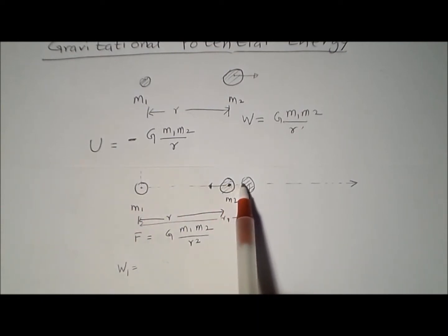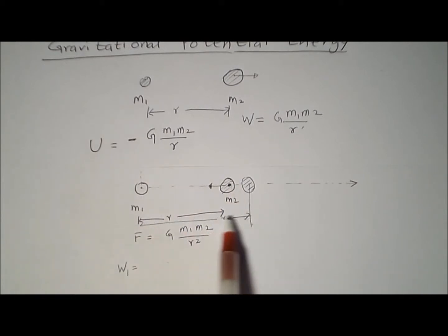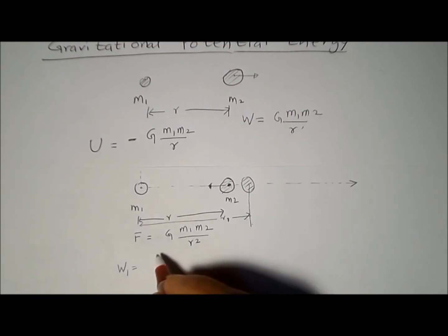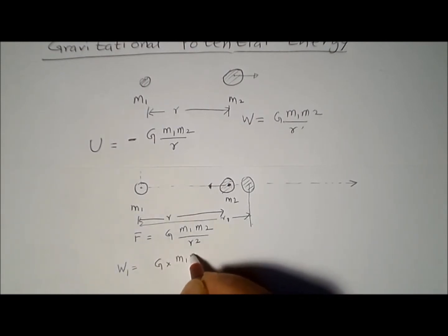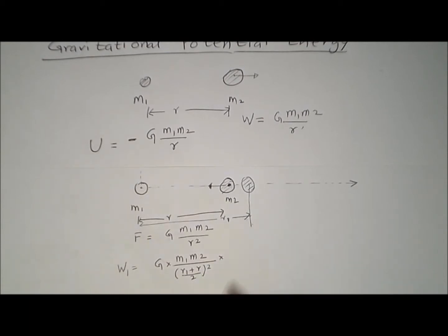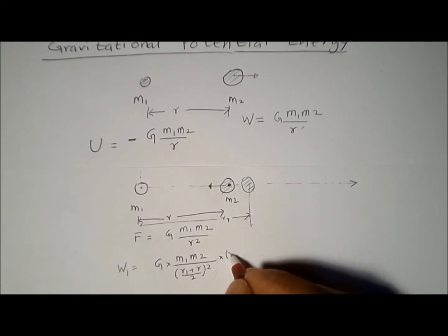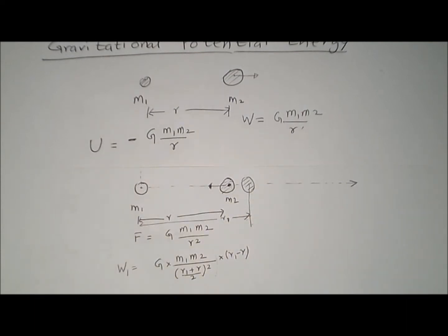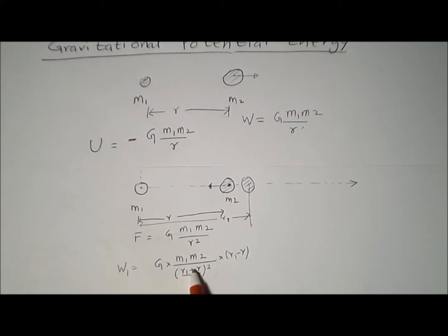We take the average distance between the two positions, which is (R1 + R) / 2. So this work W1 is given by G·M1·M2 divided by (R1 + R)/2, whole squared, multiplied by the distance moved, R1 minus R. Here we use a trick: (R1 + R)/2 is the arithmetic mean of R1 and R.